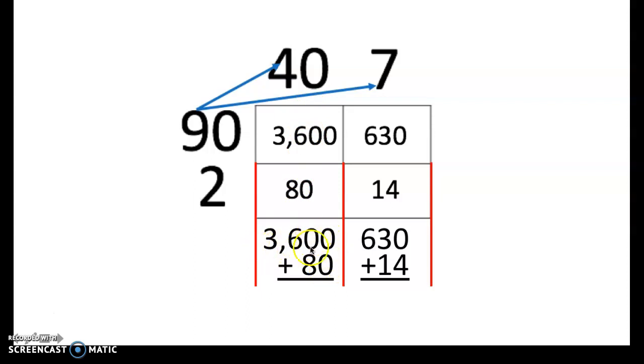My ones are next to my ones. My tens over my tens. Hundreds over hundreds. Thousands over thousands. And the same over here with our 630 plus 14. Ones place, tens place, hundreds place are perfectly aligned.